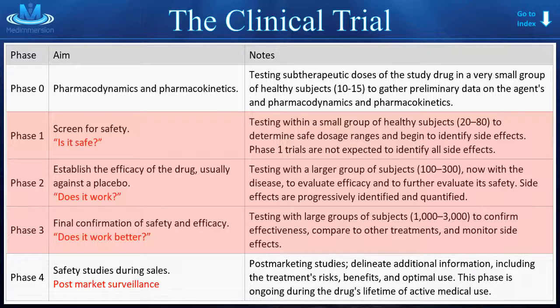Phase 2 is where we start working with larger groups of people who actually have the disease that we're trying to study. The question for this phase is: does it work? Does the drug do what we thought it was going to do in people with the disease? Side effects are continually monitored — in fact, side effects are never not monitored through Phases 2, 3, and 4. For the entirety of a drug's life, we're constantly watching and recording side effects.